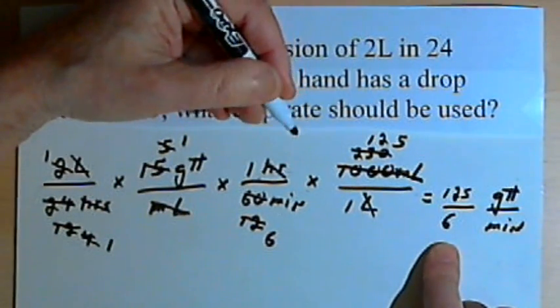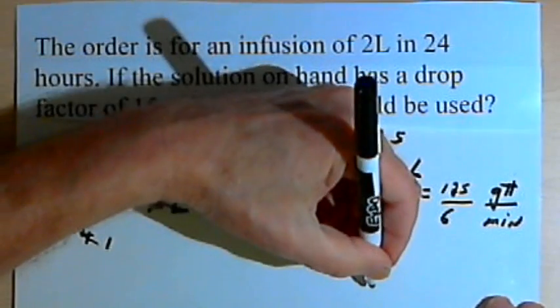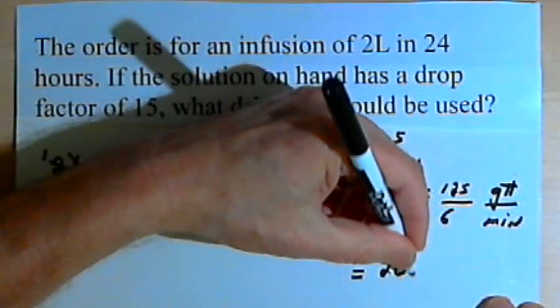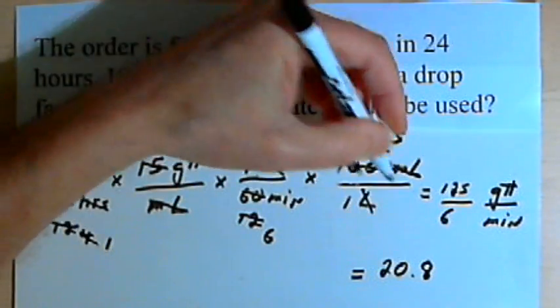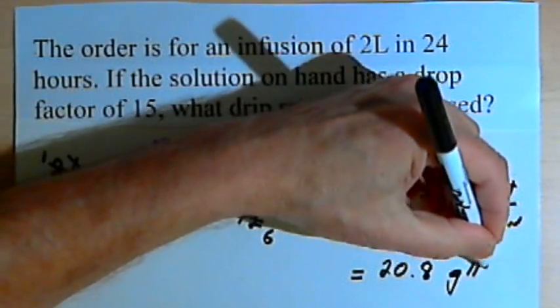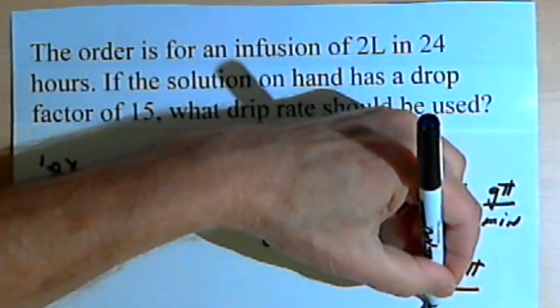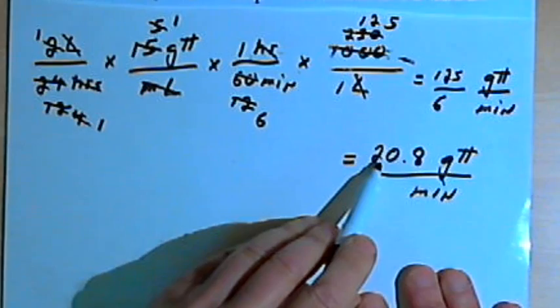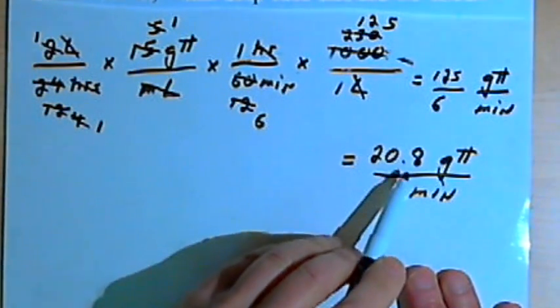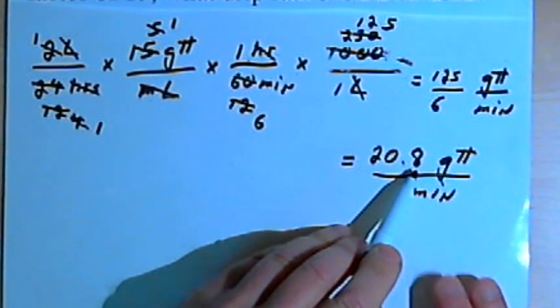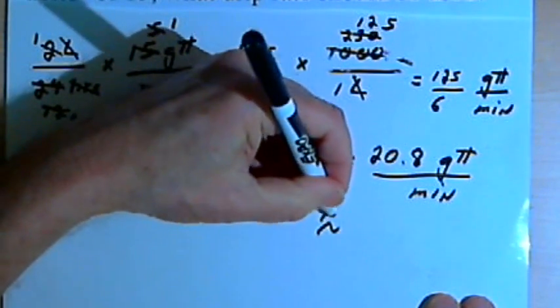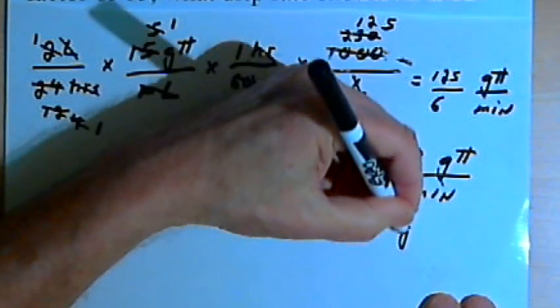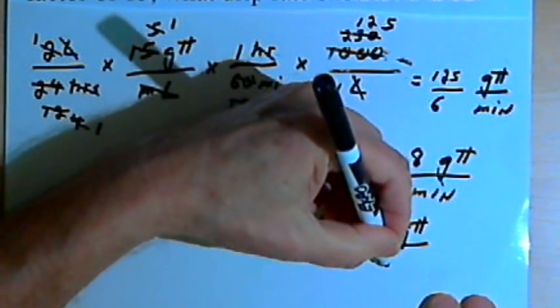If we take this fraction and put it into a calculator, we find that 125 over 6 equals 20.8. So that's 20.8 drops per minute. We're going to round this number. Since the decimal is 5 or greater, this becomes 21 drops per minute.